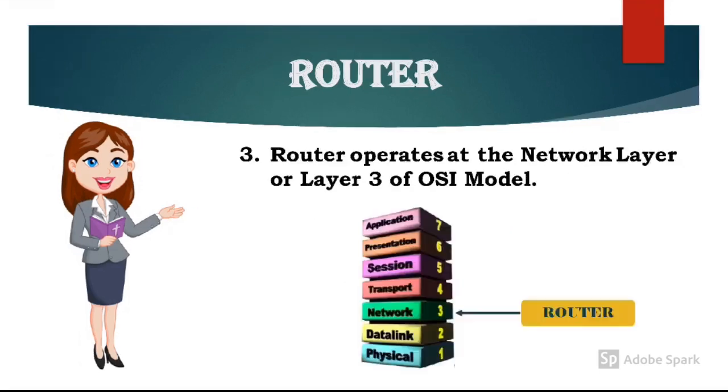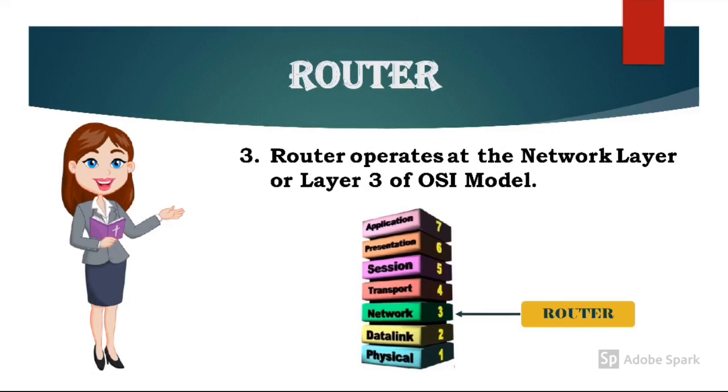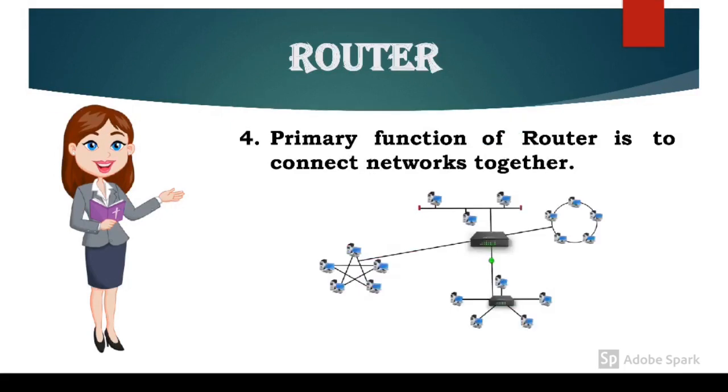The third point says: router operates at the network layer or layer 3 of OSI model. It means router OSI model ki third layer yani ki network layer par operate karta hai. Jaisa ki hum previous video mein padh chuke hain, repeater OSI model ki layer 1 yani ki physical layer par aur bridge layer 2 means data link layer par work karta hai, waisa hi router OSI model ki third layer yani ki network layer par operate karta hai.